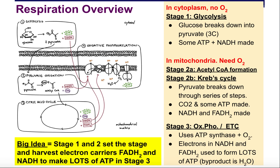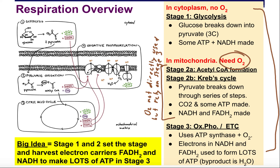This is the overview of respiration. A couple of reminders: the final stage only occurs in the presence of oxygen, while stages 2A and 2B don't directly use oxygen. They actually rely on the outcome of stage 3, because stage 3's job is not just to use oxygen to help release a lot of ATP, but it's also going to regenerate the empty batteries of NAD+ and FAD, which are required by stage 2. Without that production through oxidative phosphorylation, stage 2 won't happen.